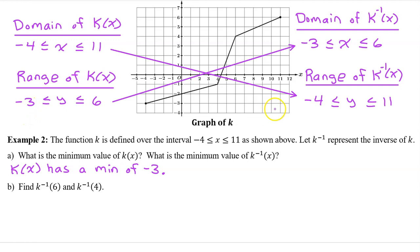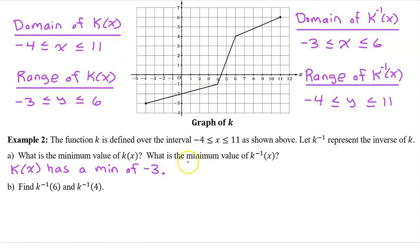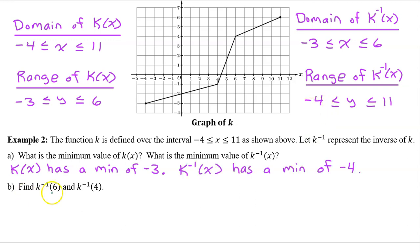For inverse functions, the x's and y's are all switched, so the domain and the range will switch places. Now we can see that the minimum value of k inverse will be negative 4, the lower limit of the range. Part B: first we need to find k inverse at 6.